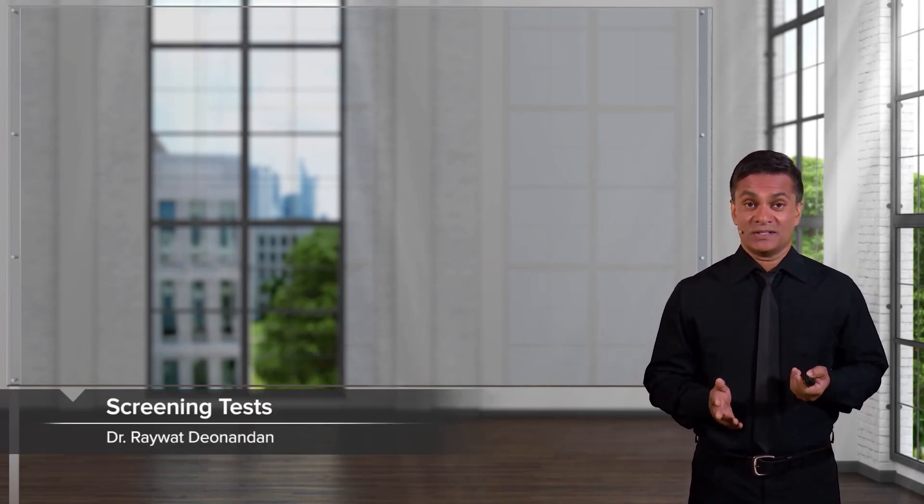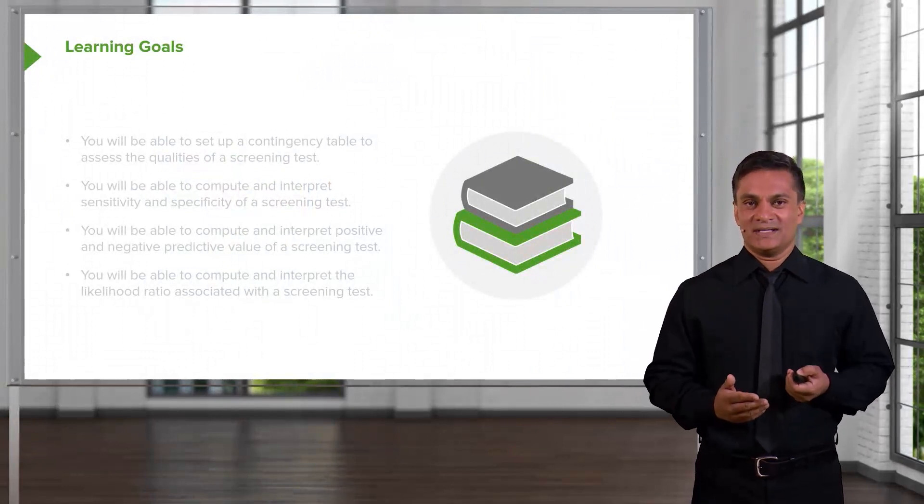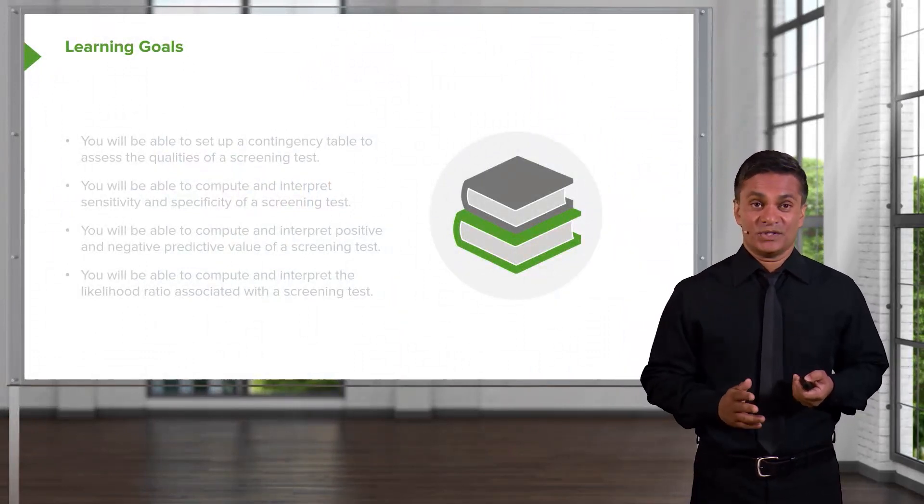You probably know about screening tests. Screening tests are things like taking people's blood pressures in the mall, or even digital rectal exams or pap smears in the office. These are kinds of tests we do to identify people for later investigation. In this lecture, we are going to learn some things about how to assess the qualities of screening tests epidemiologically.